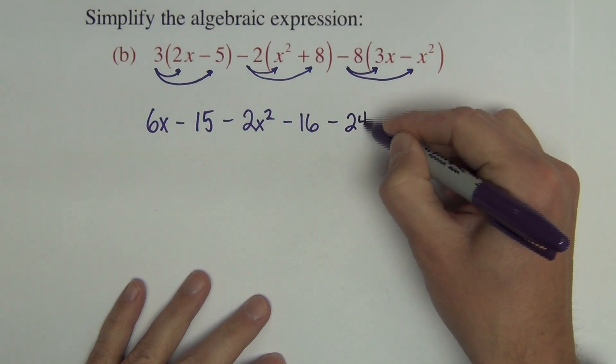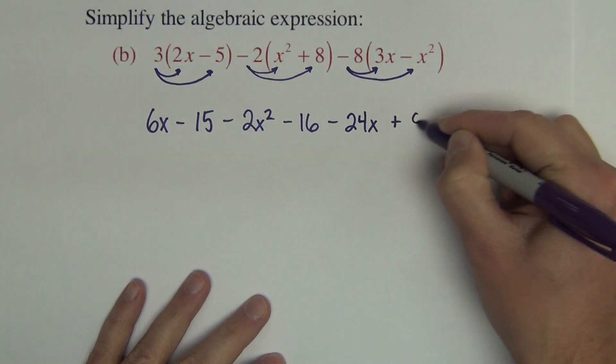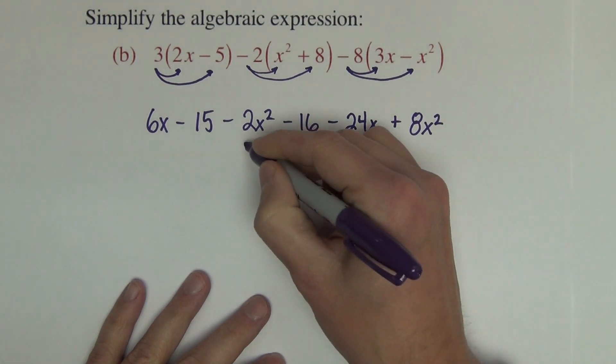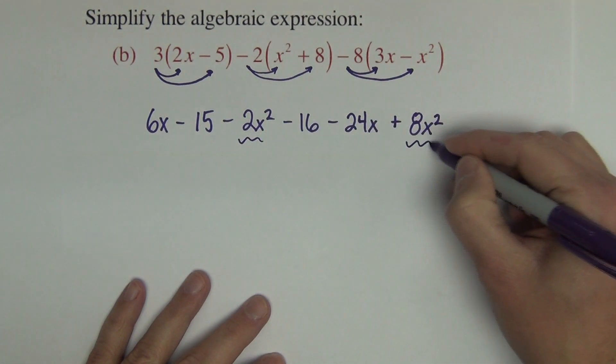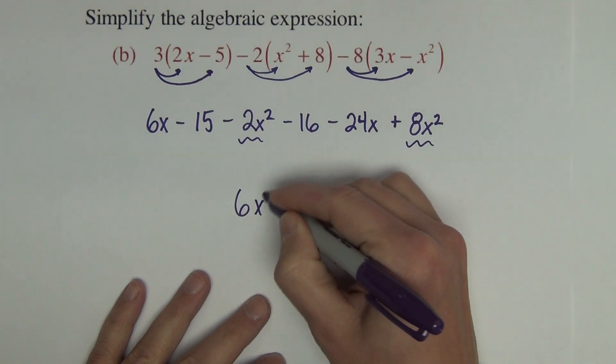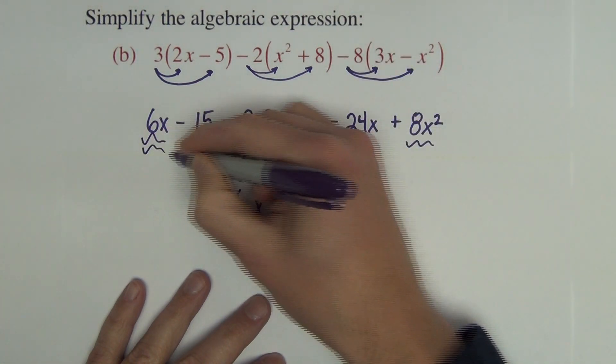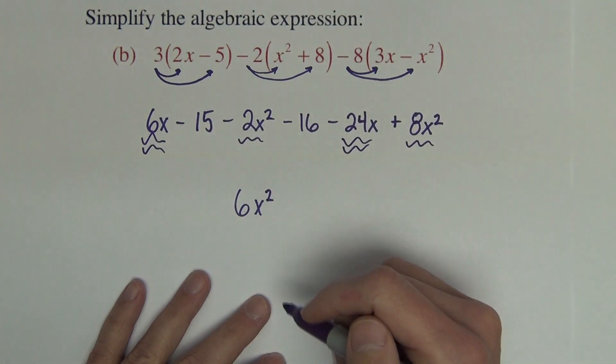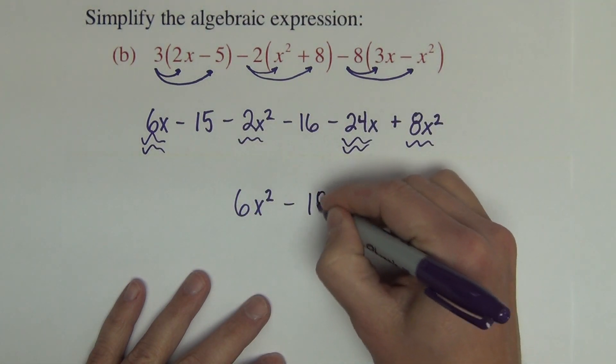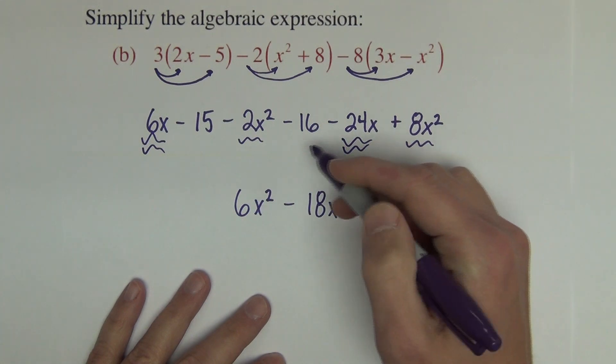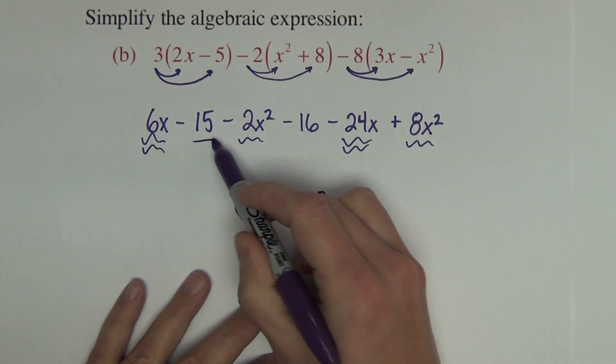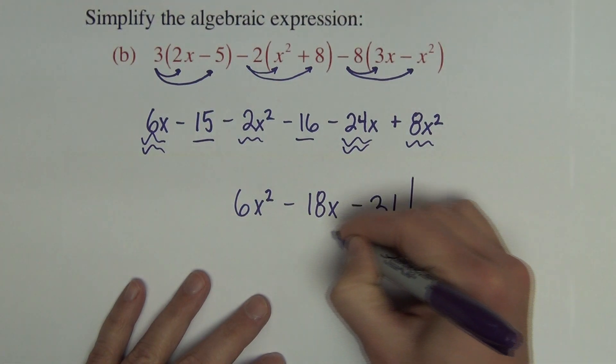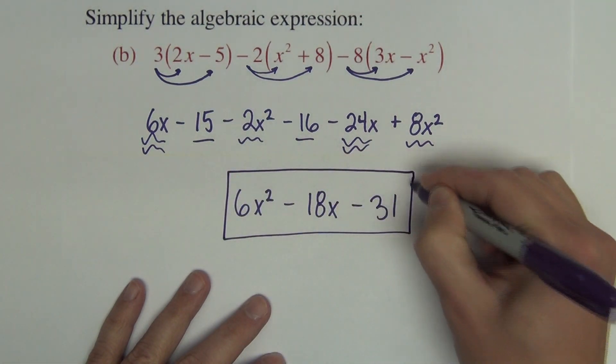So like terms, x squareds combined to 6. And then we've got x's. So 6 minus 24 is negative 18x. And then we've got the constants, which combine to negative 31. And finished.